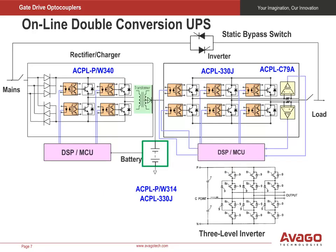Another important application is the online double-conversion UPS. Isolated gate drivers are used in the rectifier and charger, as well as the three-phase inverter. The AC mains input is rectified to obtain a DC bus voltage that supplies power to the three-phase inverter. A single-phase inverter charger charges the battery bank; it is full-bridge, and the four channels of isolated gate drivers are designed with the ACPL-P340 or ACPL-W340. Instead of a conventional two-level three-phase inverter, more three-level three-phase inverters are being designed, using 12 isolated gate drivers—six ACPL-330J drivers and six ACPL-P314 or ACPL-W314 devices. Isolated phase current and bus voltage sensors are also needed.